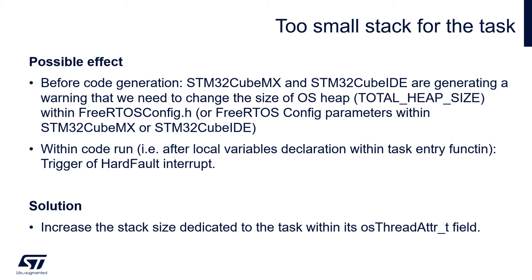Another possible issue is a too-small stack size assigned to a task. Before code generation, STM32CubeMX or STM32CubeIDE will warn that the operating system heap total heap size needs to be changed in FreeRTOSConfig.h. Within the code, for example after local variable declarations inside a task entry function, the application will land in a Hard Fault interrupt. The solution is to increase the stack size defined within the task creation function — remember that the stack size for a task is defined in words.